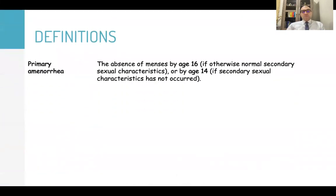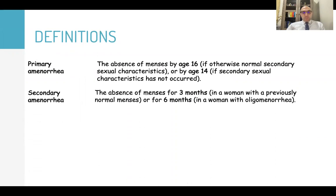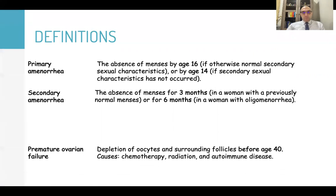Definitions: Primary amenorrhea is absence of menses by age of 16 if otherwise normal secondary sexual characteristics are present, or by age of 14 if secondary sexual characteristics have not occurred or developed. Secondary amenorrhea is absence of menses for three months in women with previously normal menses, or for six months in women with oligomenorrhea.